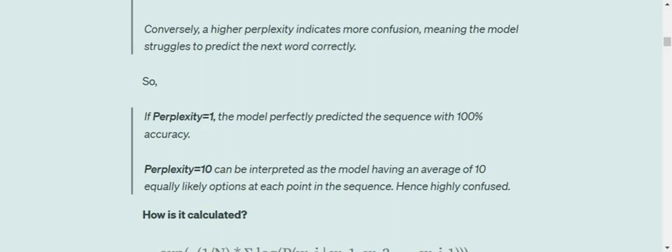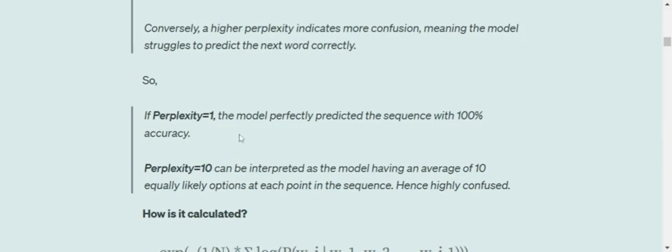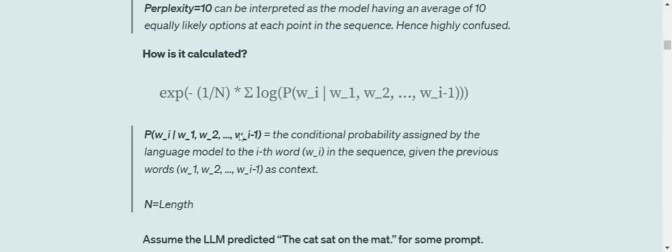If perplexity equals 10, it can be interpreted that at any given point in time the model has about 10 options to choose from to put a word in the next sequence. The model is very confused because it has 10 options, hence it's not able to clearly decide. Higher perplexity means more confusion.